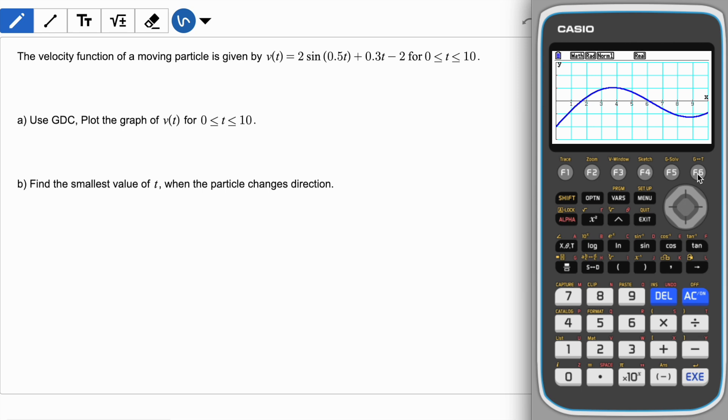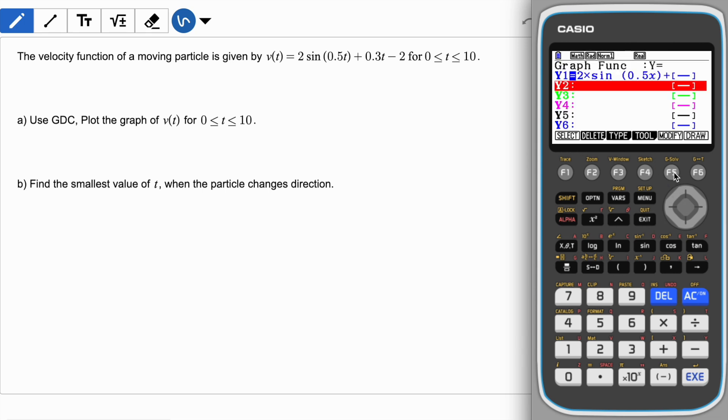Once your graph is visible, I'm sure you can play with g solve and analyze this function. For example, use GDC plot this graph. When you copy, make sure you copy few values which are first is the y intercept which is 0 comma minus 2.